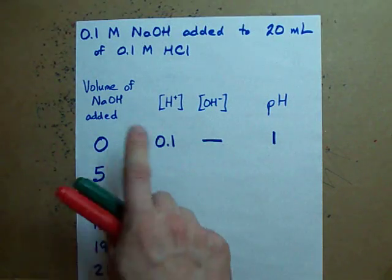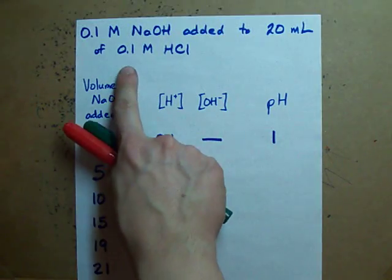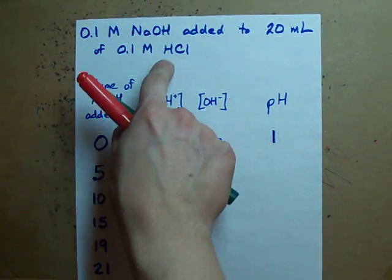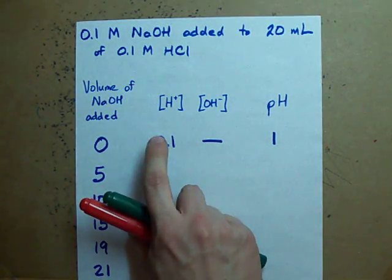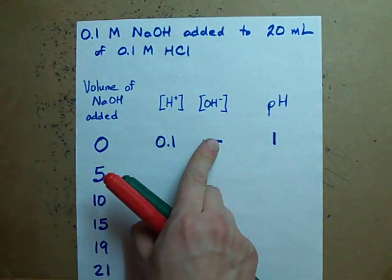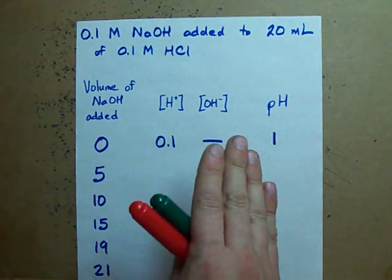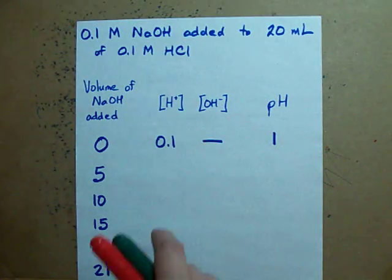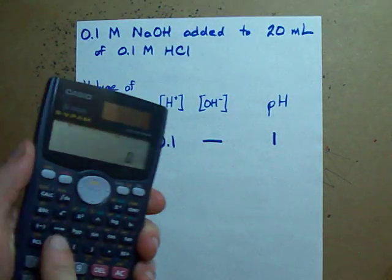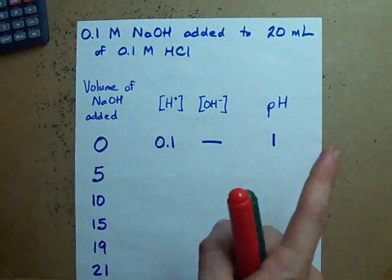So before I add any NaOH the concentration of H+ is 0.1 because that's the concentration of my HCl and it's a strong acid. Because my H+ is so large I don't have any OH- in solution or very very little. It's not going to affect anything. If you take the negative log of this concentration on your calculator you'll find the pH turns out to be 1.